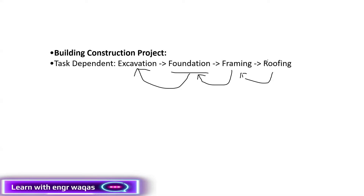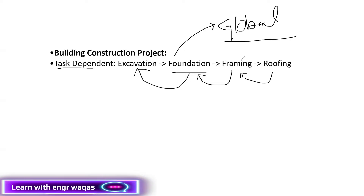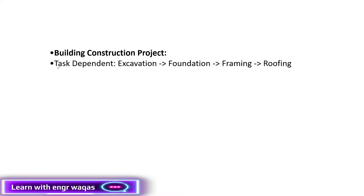The second important thing: these activities are going to follow a specific calendar, which would be called the global calendar. They are going to share that calendar. Framing, foundation, and excavation are all going to follow the same calendar. That is why we call such activities task dependent activities.